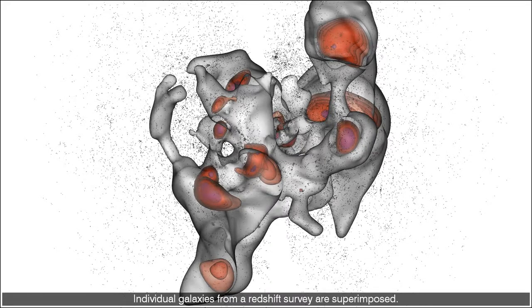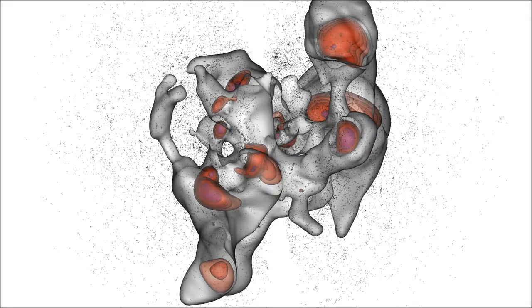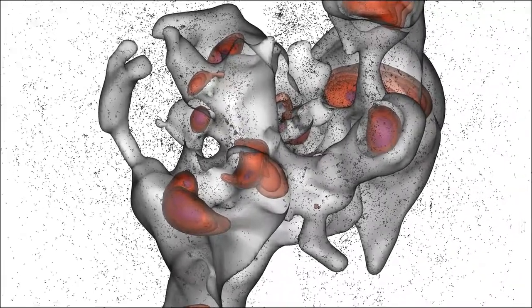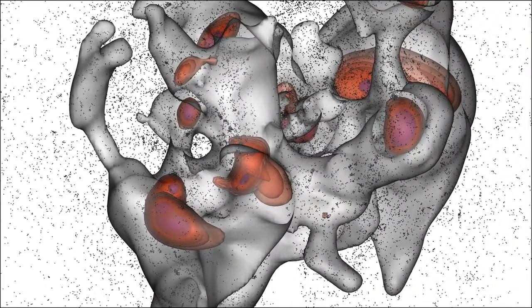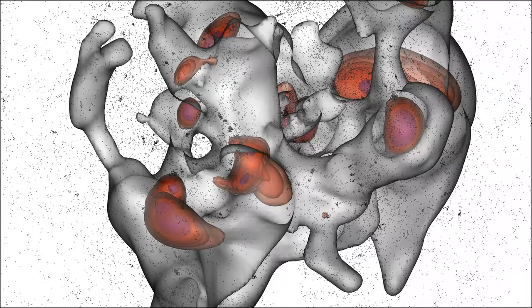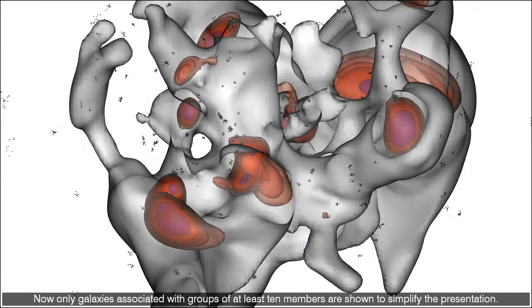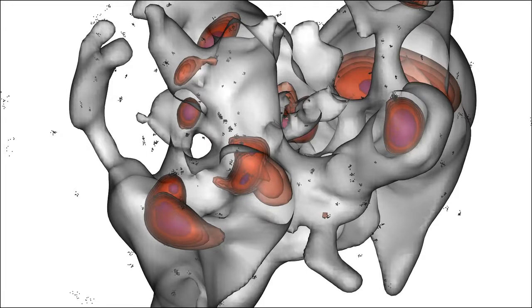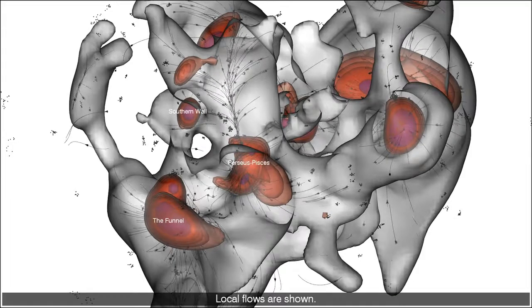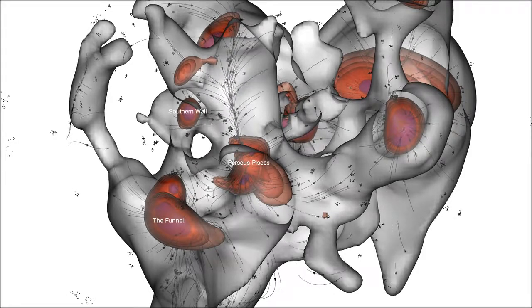Individual galaxies from a redshift survey are superimposed. Now only galaxies associated with groups of at least 10 members are shown to simplify the presentation. Local flows are shown.